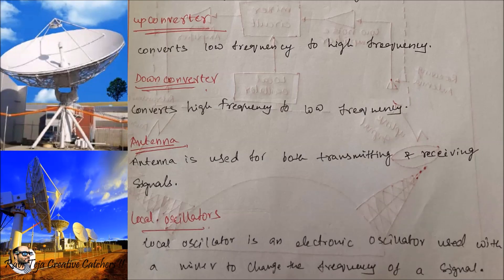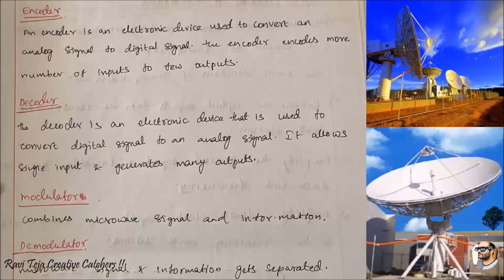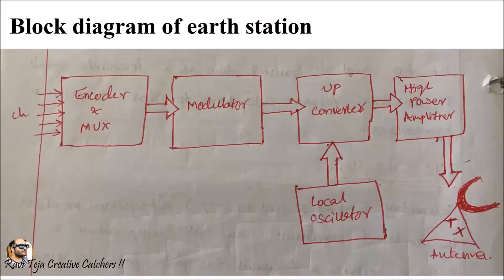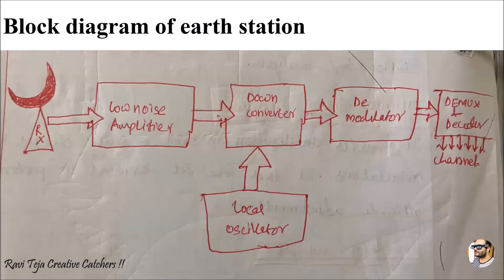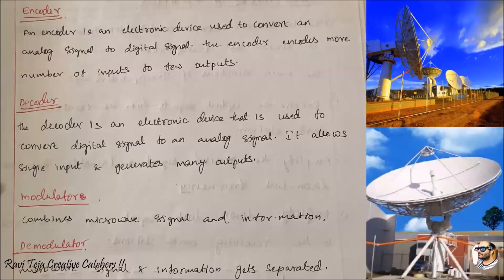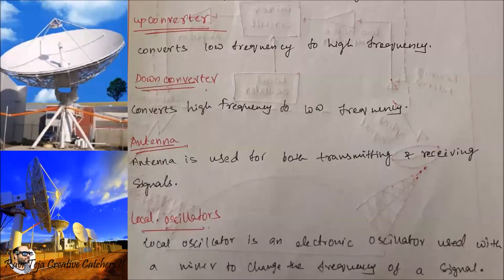So these are the main blocks of our whole Earth Station block diagram. In an Earth Station you have two blocks: one is transmitting and one is receiving. The encoder, decoder, modulator, demodulator, up converter, down converter, antenna, and local oscillator — all these blocks are electronic devices which play an important role in the Earth Station block diagram.